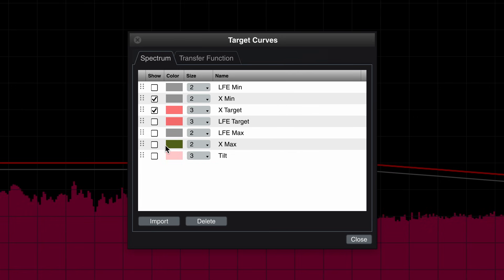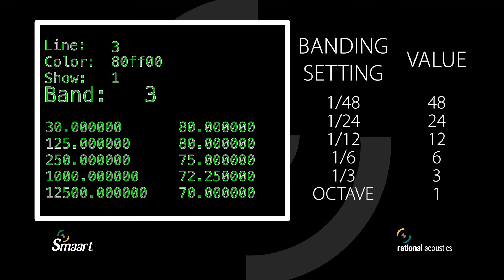Show Line can be toggled from within the target curves menu as well. The last heading line, Band, sets the banding of the target curve. This is necessary for spectrum target curves since they're locked to exact SPL values. While banding is normally expressed as a fraction, here it is designated by its denominator. For instance, one-third octave banding would be a 3, one-sixth octave banding would be a 6, and so on. For full octave banding, simply use a 1.